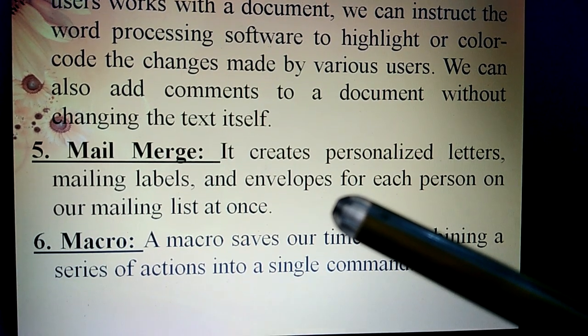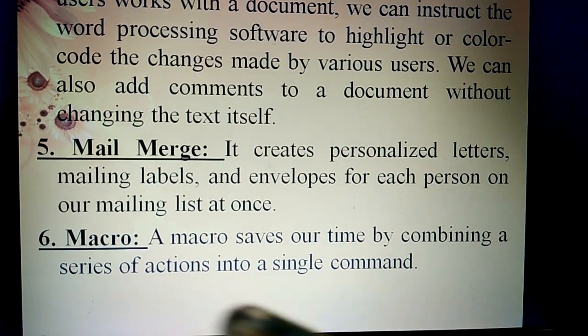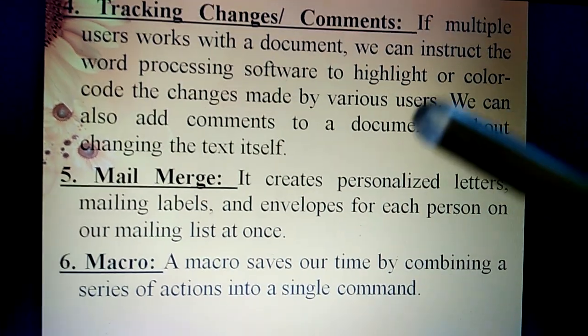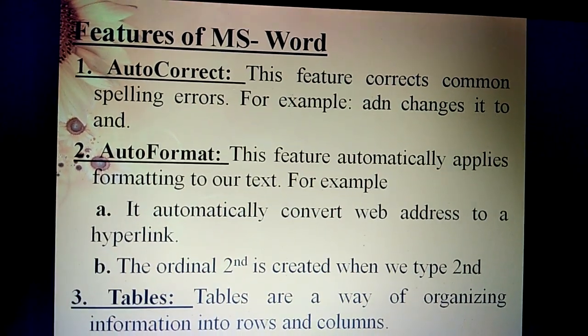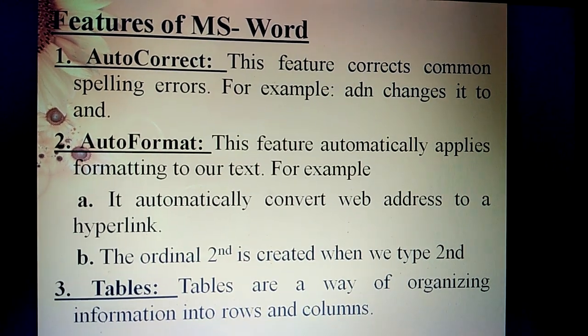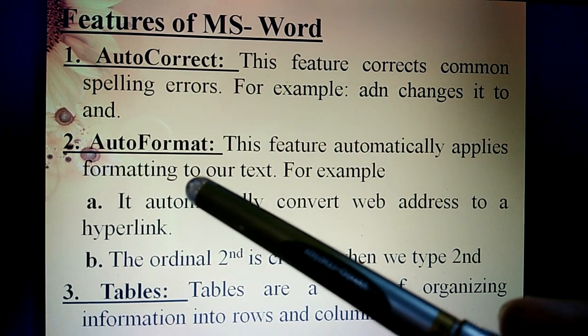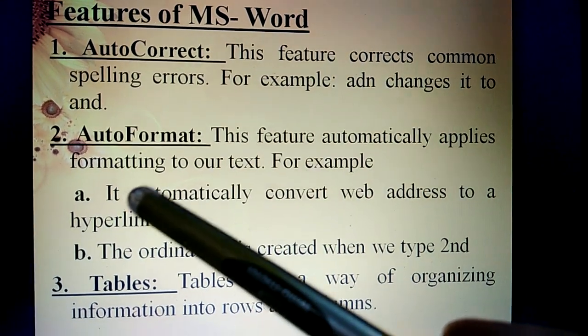Sixth, Macro. A macro saves time by combining a series of actions into a single command. So these are six main features included in MS Word. Please keep the difference between AutoCorrect and AutoFormat: AutoCorrect means spelling errors and AutoFormat means formatting.